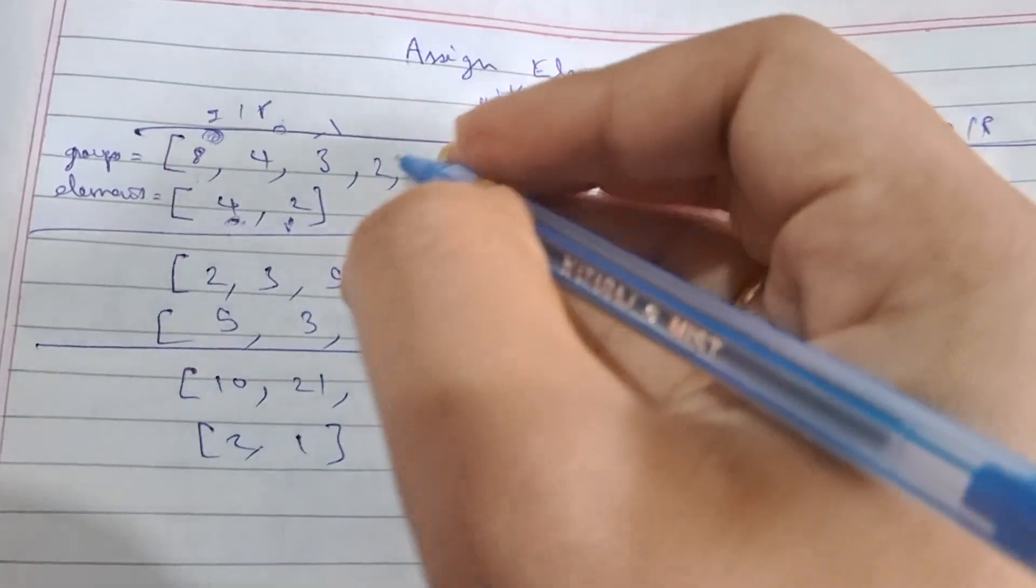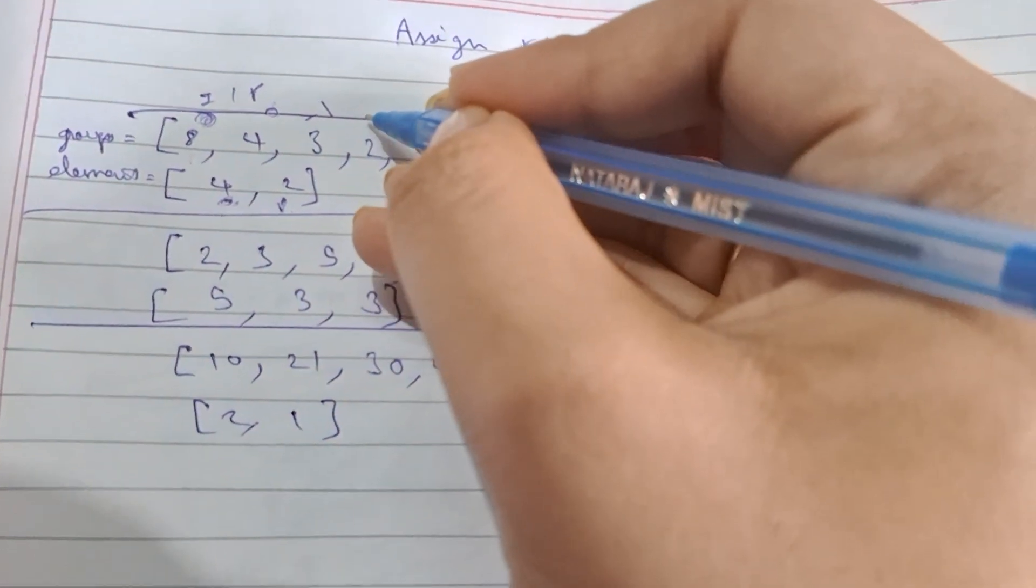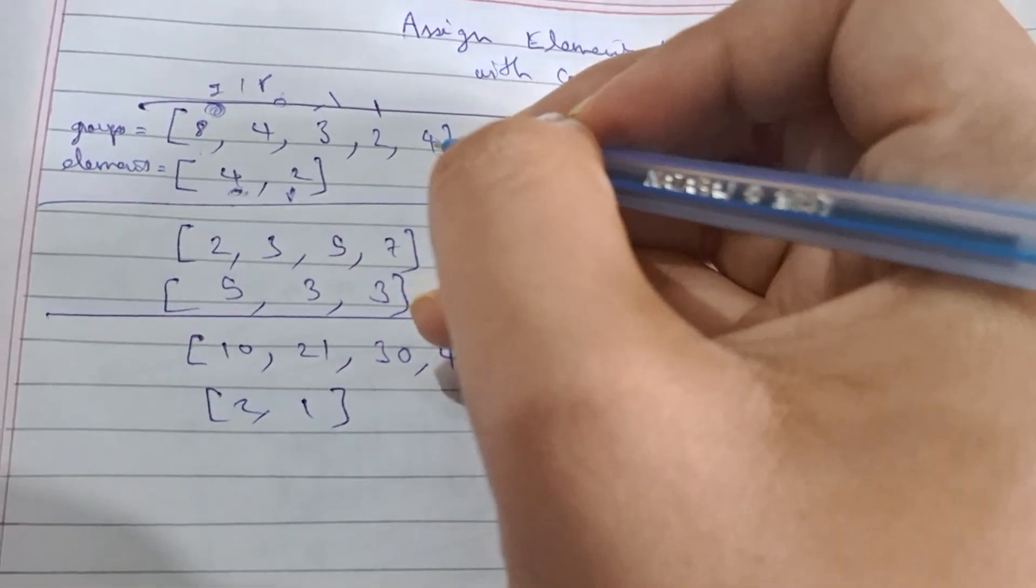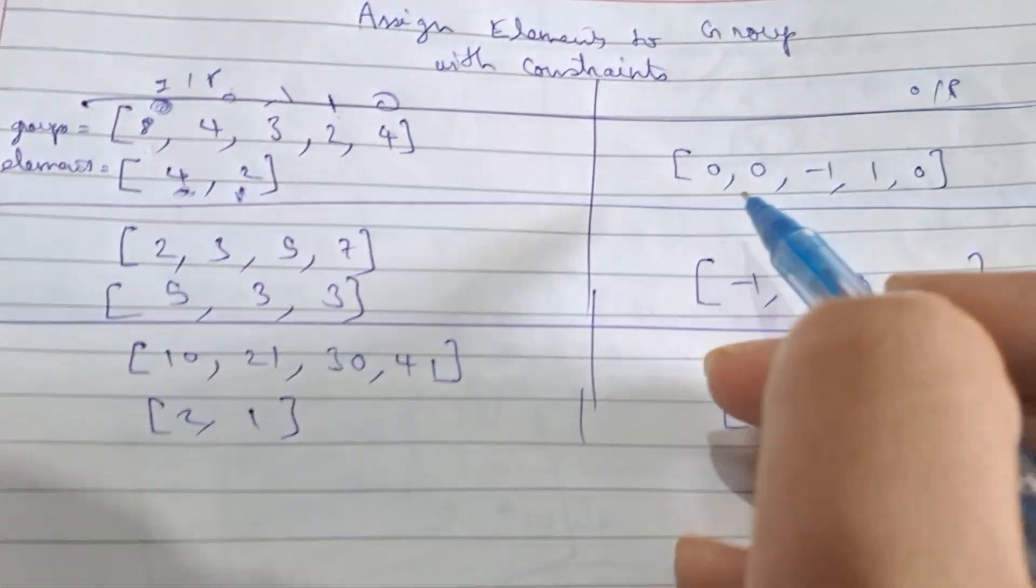For 4 it is again 0, so the result is 0, 0, minus 1, 1, 0. So this is what basically the whole problem is about.